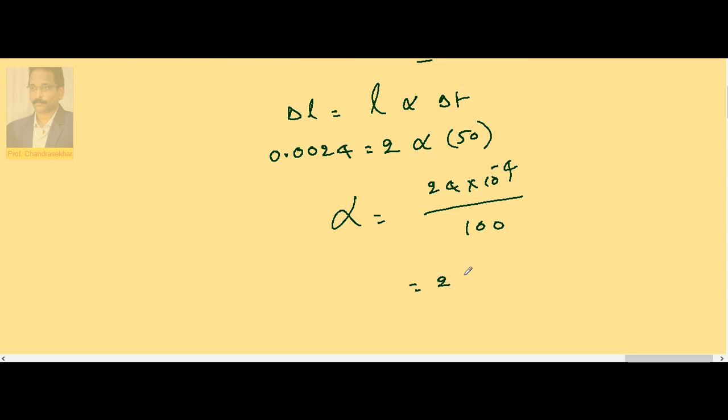So it is nothing but 24 into 10 to the power of minus 6 per degree centigrade. So alpha of aluminum is 24 into 10 to the power of minus 6 per degree centigrade.